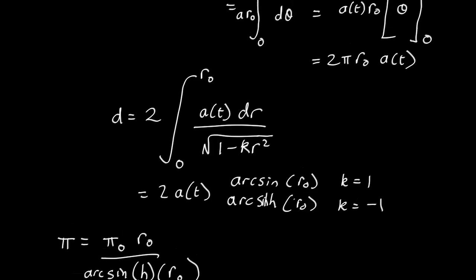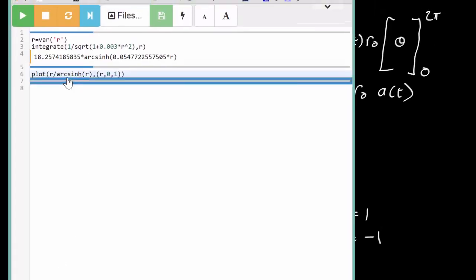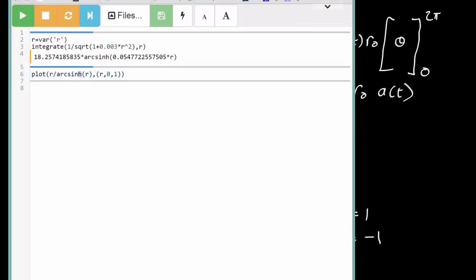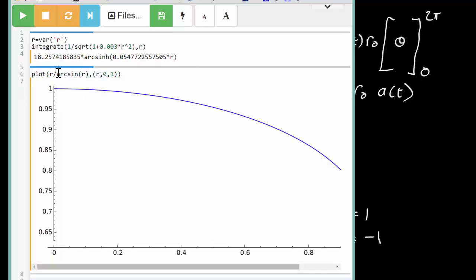Well let's go back to our computer algebra system. So here we've got the inverse sine so we've got r over arc sine. Let's see what that looks like. So what it does is we should put a pi in here. This is I haven't put the pi in so it's just telling you the ratio of pi to what it should be in our own universe and it's telling us that pi is what you'd expect as long as r is small but as the radius of your circle gets bigger and bigger and bigger the value of pi starts to fall.